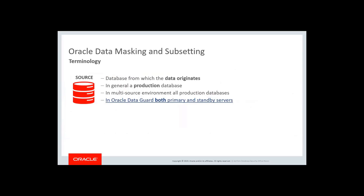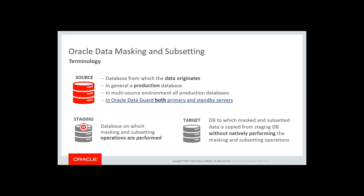Important terminology: the Source is the database from which data originates — generally the production database; in an Oracle Data Guard environment, both primary and standby are sources. The Staging is the database on which operations are performed. The Target is the database on which operations are not performed — it's only a storage that does not natively perform masking and subsetting operations. You have different approaches in both in-database and in-export modes: on-premises, hybrid (source and staging on-premises, target on cloud), clone to cloud for Oracle pluggable databases, source and target both in cloud, and DBS snap clone.